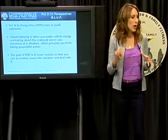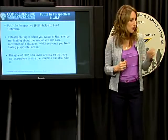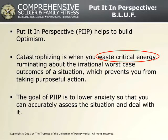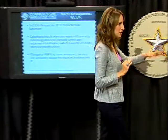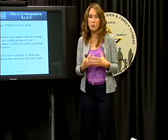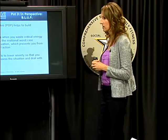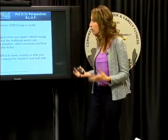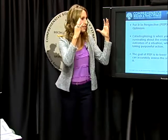Catastrophizing is when you waste critical energy — circle 'waste critical energy' — thinking about irrational worst-case outcomes, things that have a point-zero-zero-zero-one probability of happening. This stuff's not going to happen, but your mind is consumed by it — all your energy is going there — and what you're not doing is taking purposeful action. Catastrophic thinking is when all your resources are being used thinking about these dire outcomes, and because your mind is consumed with those, you're not acting purposefully.